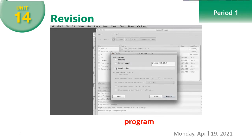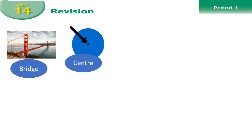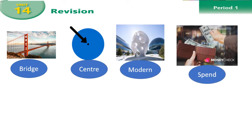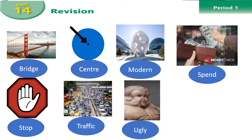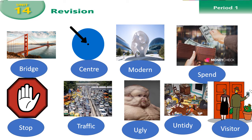Now let's move to the third group of words: bridge, center, modern, spend, stop, traffic, ugly, untidy, visitor. Let's repeat: bridge, center, modern, spend, stop, traffic, ugly, untidy, visitor.